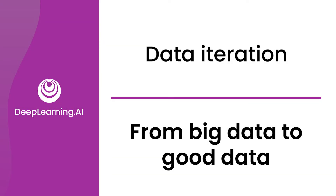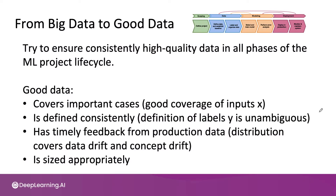You've learned about taking a data-centric approach to AI development. I'd like to leave you with a thought on shifting from big data to good data. A lot of modern AI had grown up in large consumer internet companies with maybe a billion users, and thus companies like that have a lot of data on their users. If you have big data like that, by all means, it could help the performance of the algorithm tremendously.